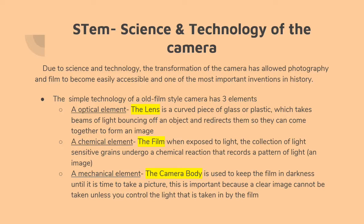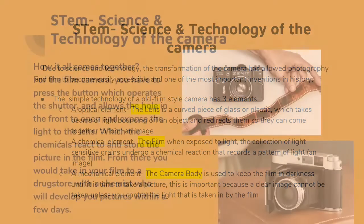A chemical element, which is the film: when exposed to light, the collection of light-sensitive grains undergo a chemical reaction that records a pattern of light. Then there is a mechanical element, which is the camera body itself. It is used to keep the film in darkness until it's time to take the picture — this is important because a clear image cannot be taken unless you control the light taken in by the film.